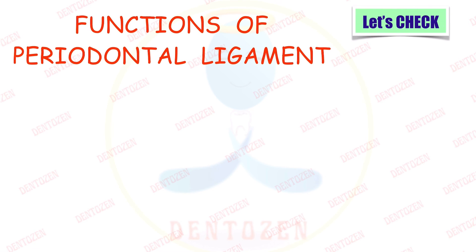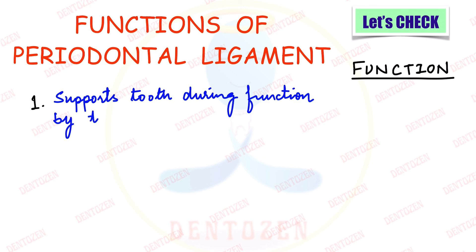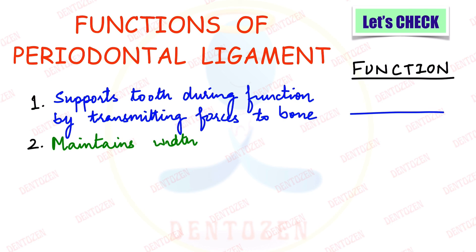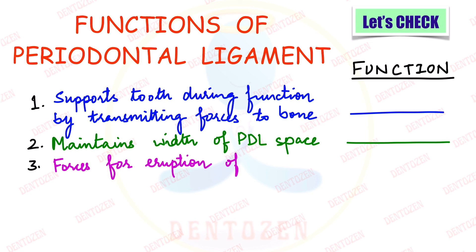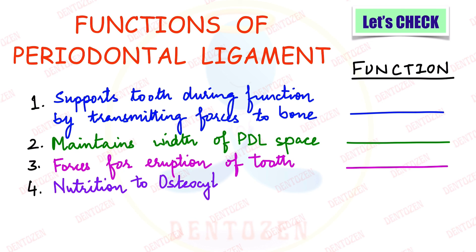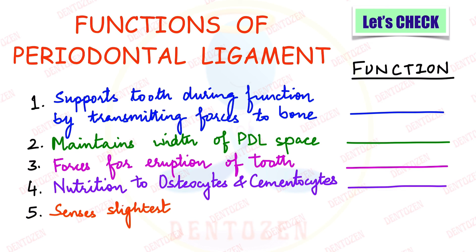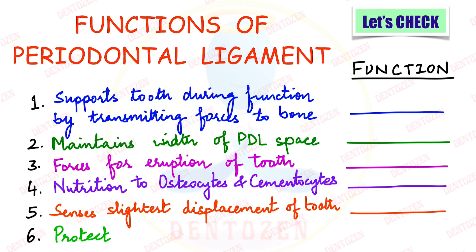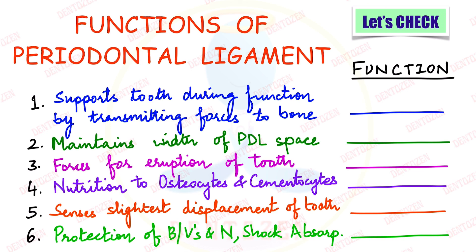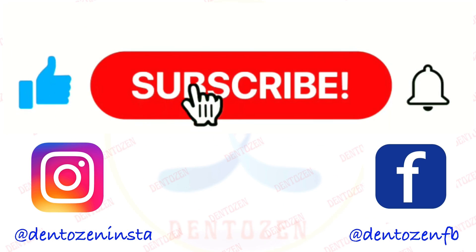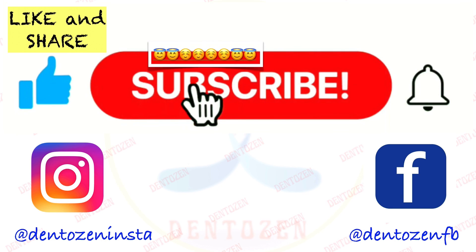Now let's check what you have learned. Here are some statements — identify which function of the PDL each describes: PDL supports the tooth during function by transmitting forces to bone; it maintains the width of PDL space; forces for eruption of the tooth are generated by the PDL; PDL provides nutrition to the cells; PDL senses the slightest displacement of the tooth; PDL provides protection to blood vessels and nerves and acts as a shock absorber. Let me know your answers in the comment section below.